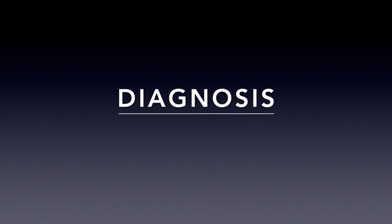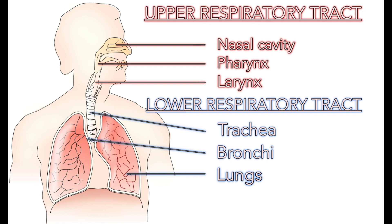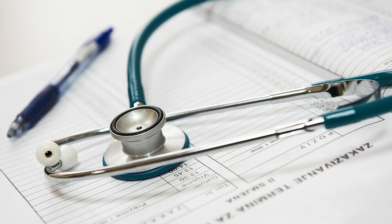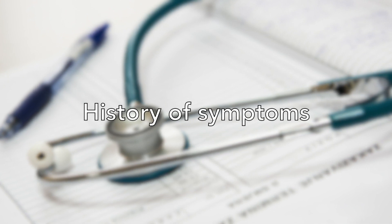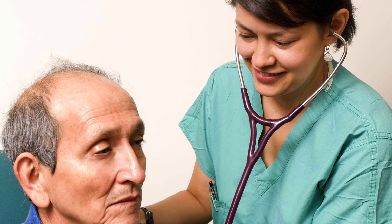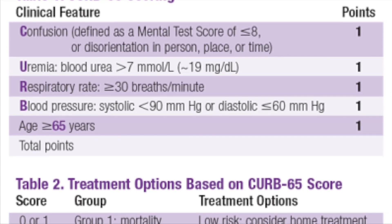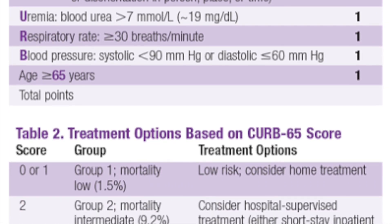Diagnosis can be quite difficult in mild cases as the symptoms often overlap between upper respiratory tract infections such as common colds and lower respiratory tract infections like pneumonia. Your doctor will need to take a careful history regarding your symptoms and then examine your chest carefully with a stethoscope. When the lower airways and alveoli are affected, this can be picked up by careful auscultation of the chest. A diagnosis can be made, as well as determining the patient's level of risk based on signs such as confusion, respiratory rate, blood pressure, and the patient's age.